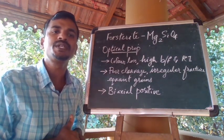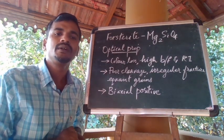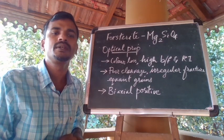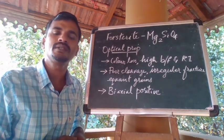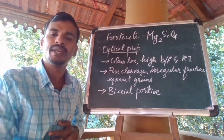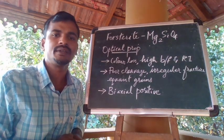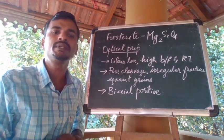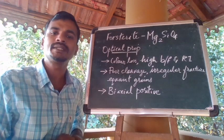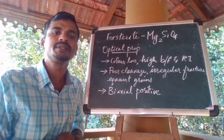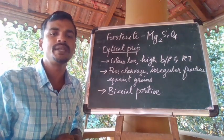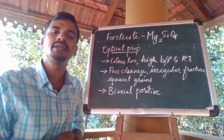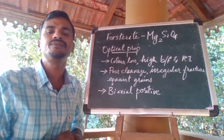Regarding occurrences and associations, forsterite is a primary mineral in many mafic and ultramafic rocks, typically associated with pyroxenes, plagioclase, spinel, garnet and serpentine. It is common as both an igneous and a metamorphic mineral in marbles, and more rarely found in sediments. The typical gem variety of forsterite is peridot — a green transparent gem variety.